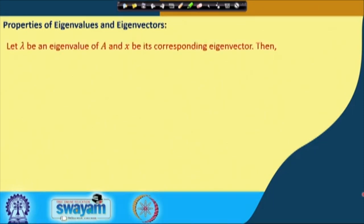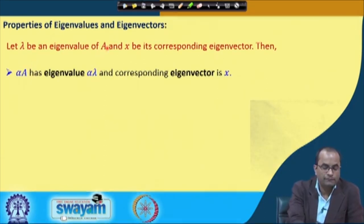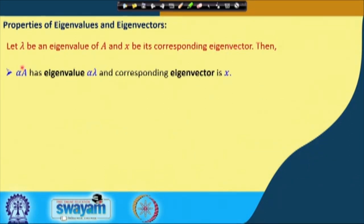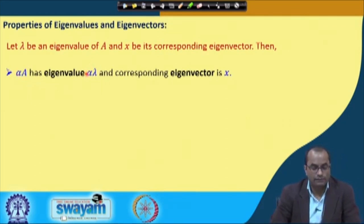The first property: if lambda is an eigenvalue of A and x is its corresponding eigenvector, then alpha times A has eigenvalue alpha lambda, and the corresponding eigenvector remains the same, that is x. Here alpha is some scalar quantity from the set of real numbers.